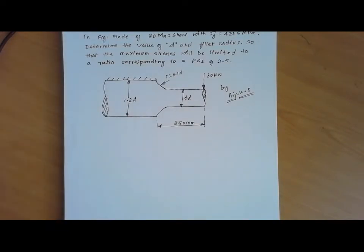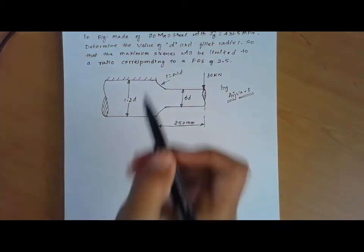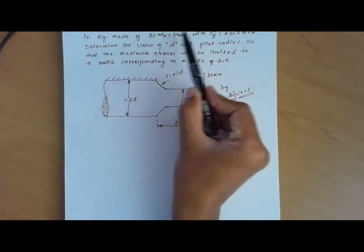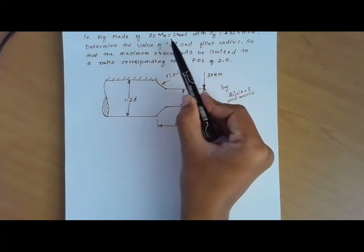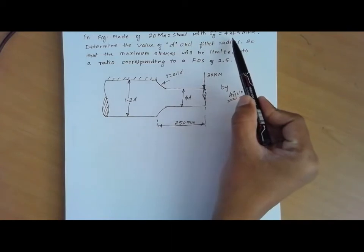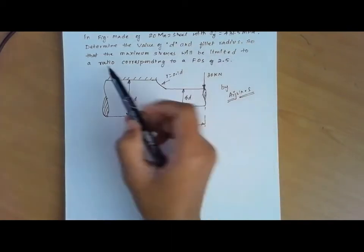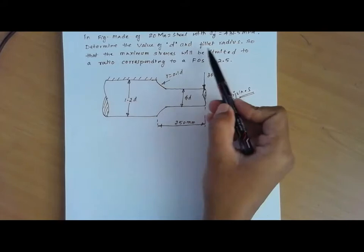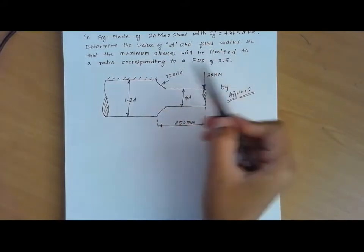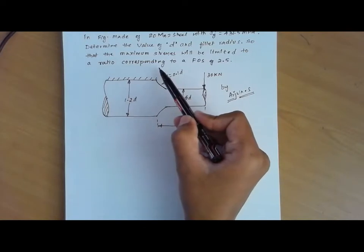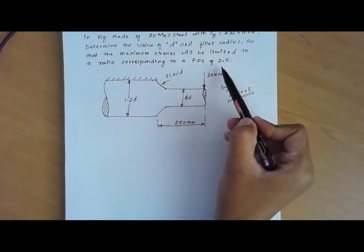Hi, I am Arjun. Today's session we are going to solve problems on stress concentration in design of machine element 1. A stepped shaft of circular cross section is made of 20 M2 steel with yield stress 431.5 MPa. We will determine the value of diameter D and fillet radius, where the maximum stress is limited by a factor of safety of 2.5.